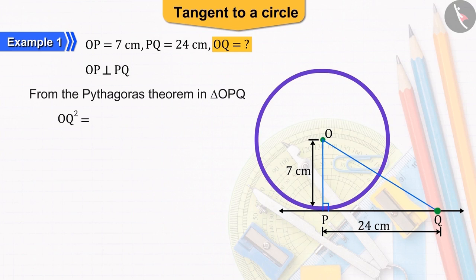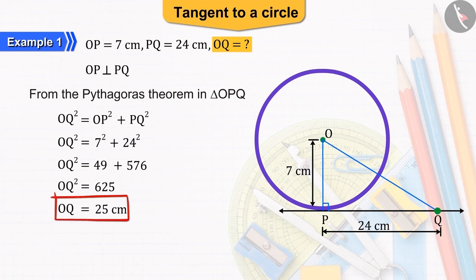From which, we get square of OQ equal to square of OP plus square of PQ. On substituting and solving, we get OQ equals to 25 cm.